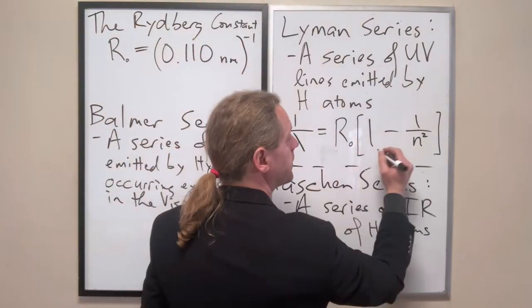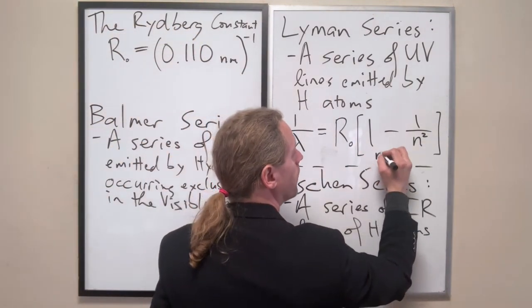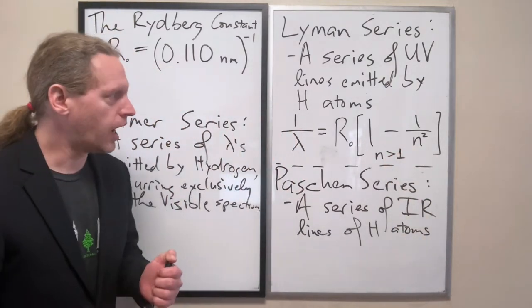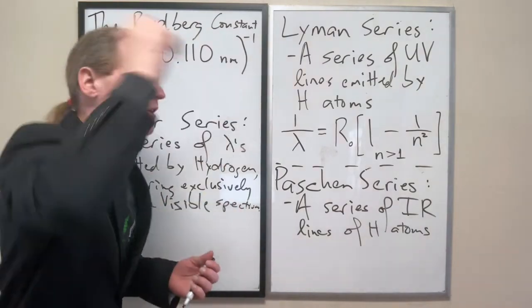So specifically this only applies for n greater than 1, and it's clear that n has to be an integer. So 2, 3, 4, 5, 6, dot dot dot.